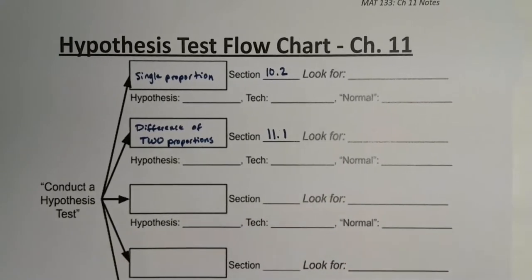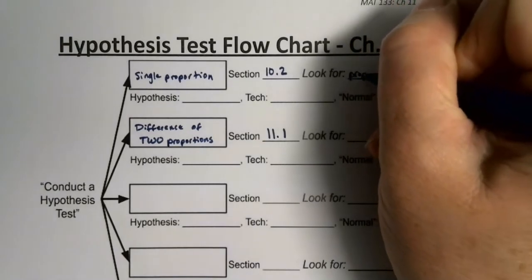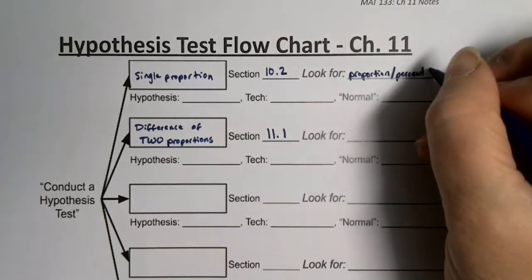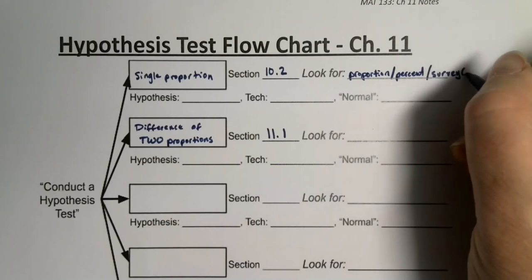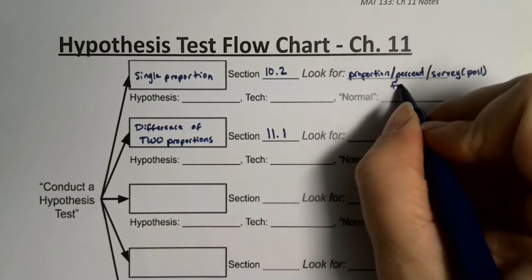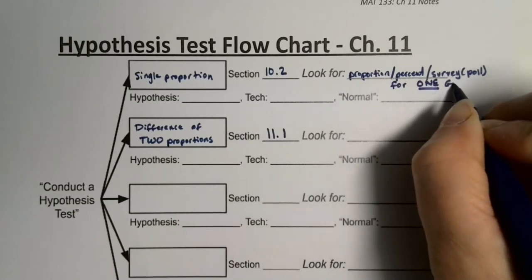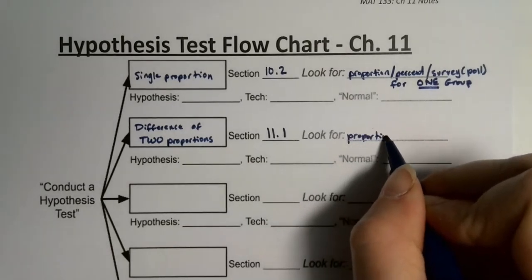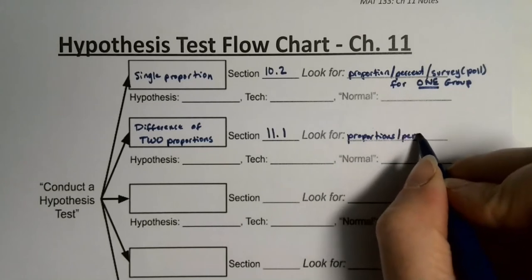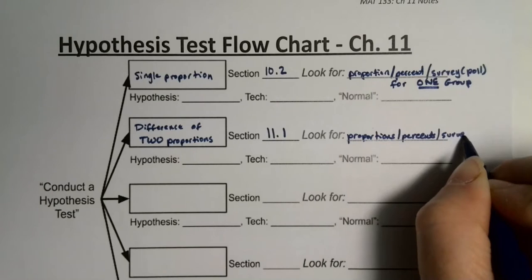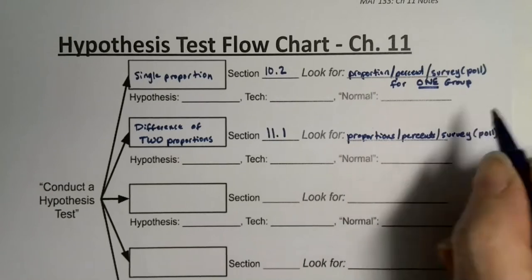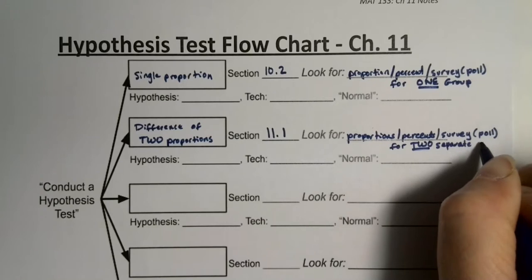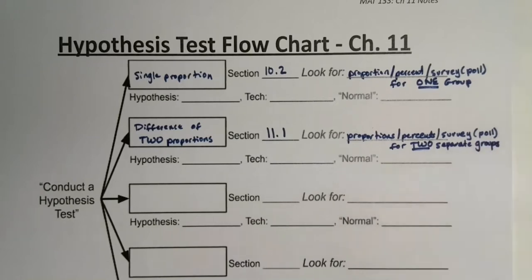These two go together nicely because they both work with proportions, percents, and surveys or polls. The single proportion test is for one group, whereas the difference in proportions has two percents and surveys and is for two separate independent groups. It's still important to know how to determine whether groups are independent.